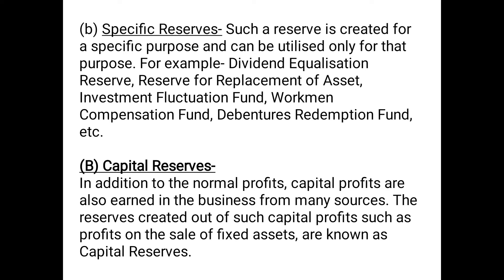Fixed assets, as we have already discussed, are purchased for the purpose of using in production and not for resale. So if any fixed asset — machinery or plant — turns obsolete or useless, it can be sold off secondhand. Whatever profit is generated from that sale of fixed asset is considered a capital profit, and that amount kept as a reserve will be considered capital reserve.